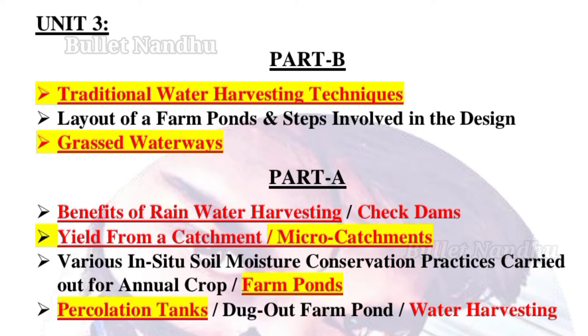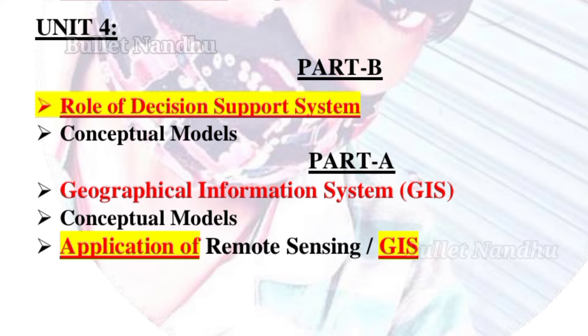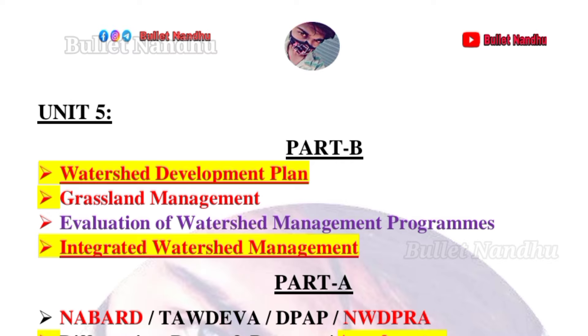Unit IV, Part B: decision support system — very important, first preference. Conceptual models. Unit IV, Part A: GIS application — very important, first preference. Application of GIS — very important. Conceptual models — fourth unit. For 2-mark and 13-mark questions, GIS concepts are important.